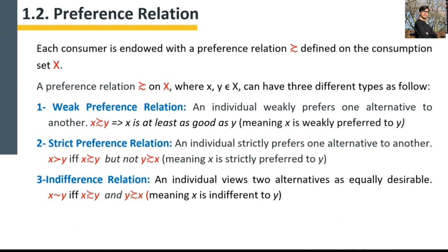In the case of strict preference relation, an individual strictly prefers one alternative to another. We use the notation: x is strictly preferred to y if and only if x is at least as good as y but y is not at least as good as x — meaning x is strictly preferred to y. Again, if x is orange and y is apple, you say 'I strictly prefer orange over apple,' meaning for sure you will choose orange.